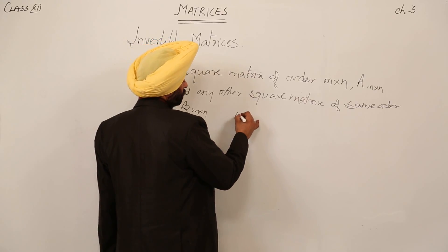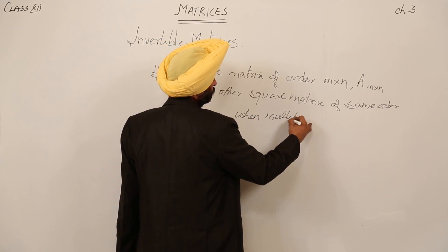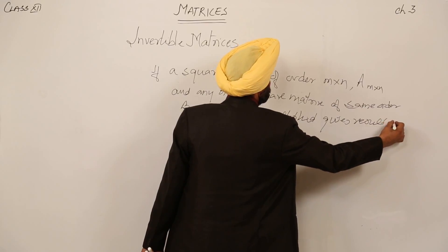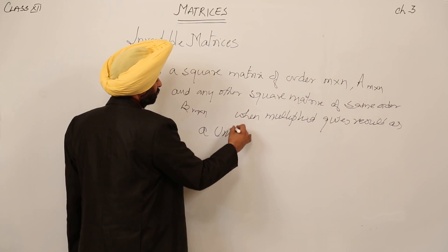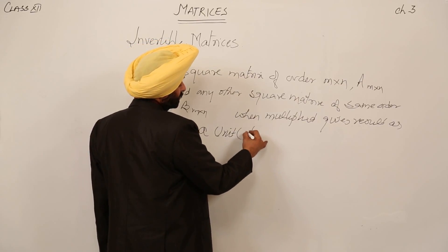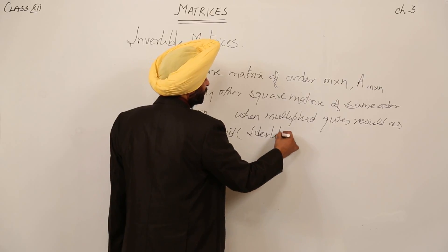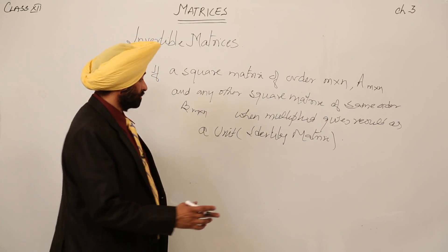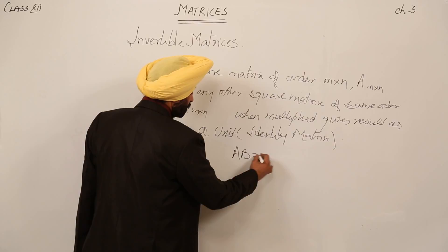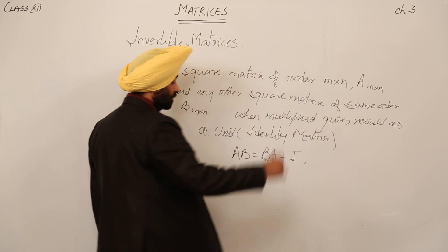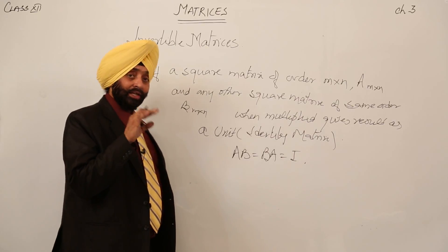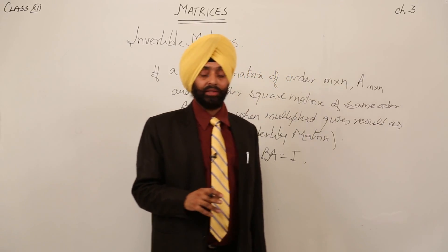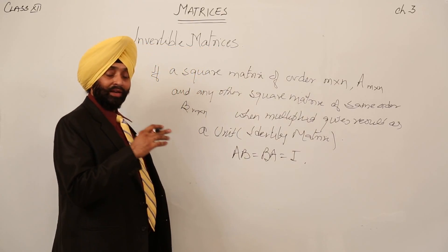When multiplied, they give a result as a unit or identity matrix. Then we are getting the inverse. The condition is: A times B is equal to B times A is equal to I. Multiplying either A by B or B by A, we get the identity matrix — then only we can find the inverse.